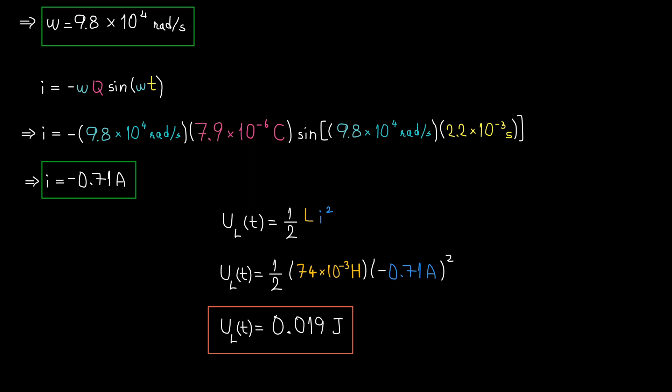Going back to the energy equation and substituting the numerical values, we get 0.019 joules of energy stored in the inductor at T equals 2.2 milliseconds.